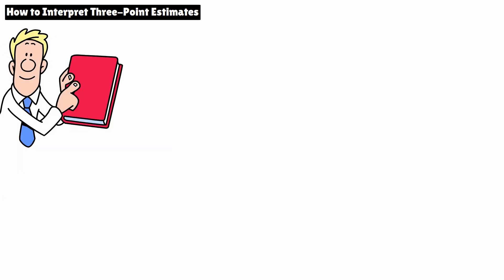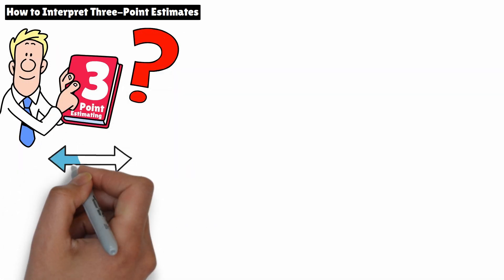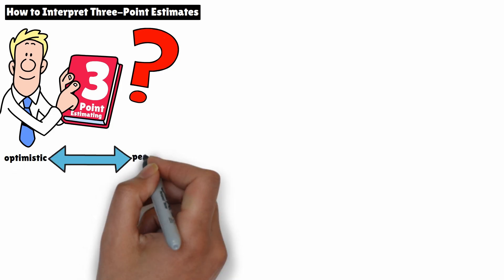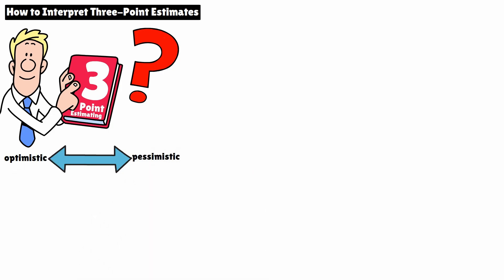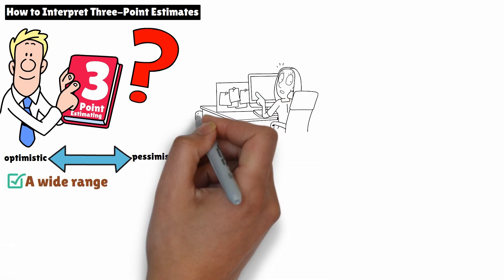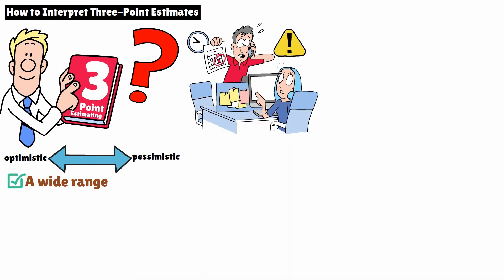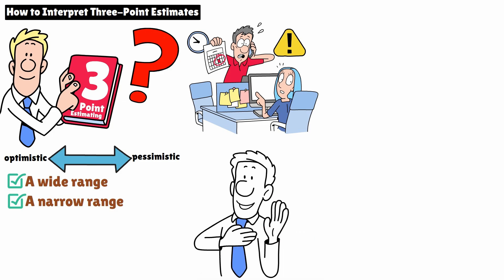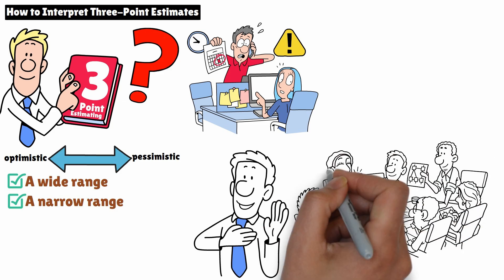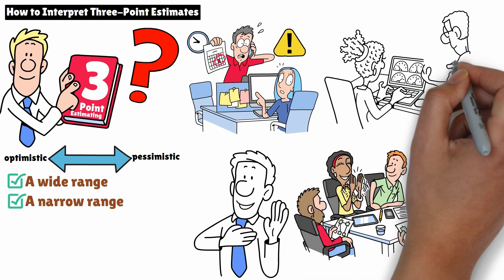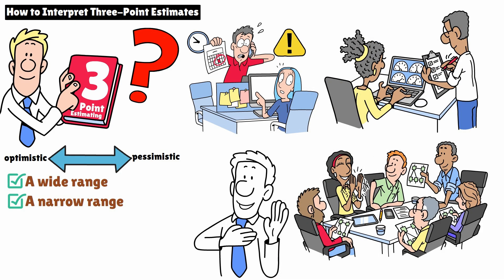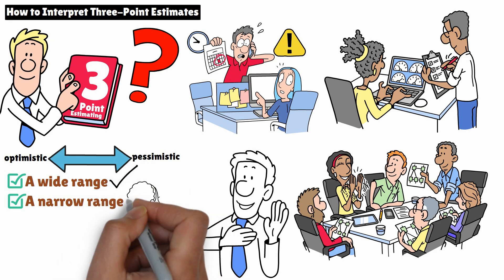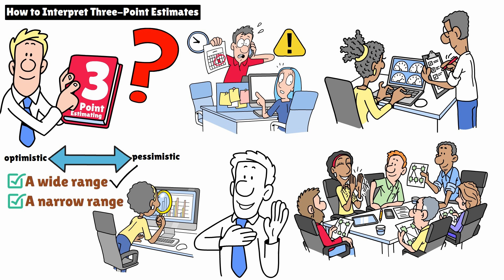Once you have your three-point estimate, how do you interpret it? The key lies in the range between your optimistic and pessimistic estimates. This range tells you a lot about the level of uncertainty or risk involved in the task or activity. A wide range between the optimistic and pessimistic values indicates high uncertainty — you should be cautious, as there is a greater chance that things could go wrong or there are unknown factors at play. A narrow range suggests higher confidence in the estimate, with less variability and less risk. If you see a wide range, you might want to plan for additional contingency or investigate the risks further.